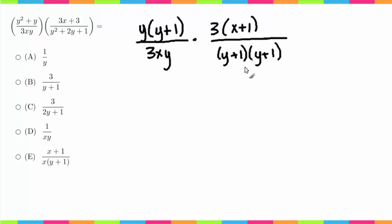Now what I'm going to do is cross cancel. Looking this way, I notice that we have a 3 that can cancel. Looking this way, I notice that we also have a y that we can cancel. Looking this way, I also notice that we have a (y + 1) that we can cancel. So it looks like we're left with (x + 1) over x times (y + 1).